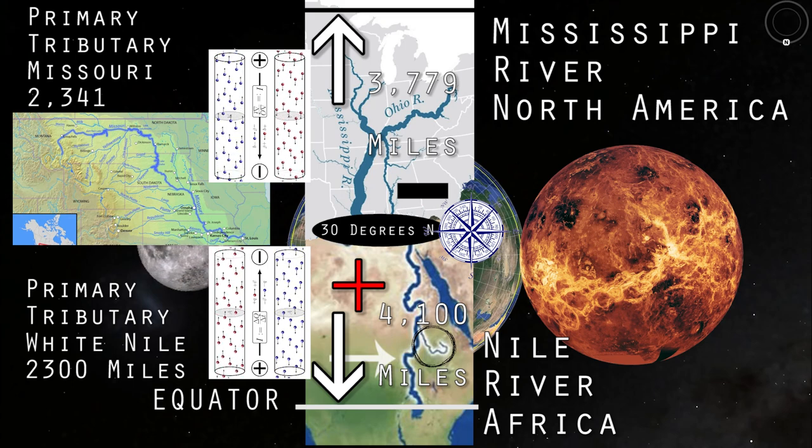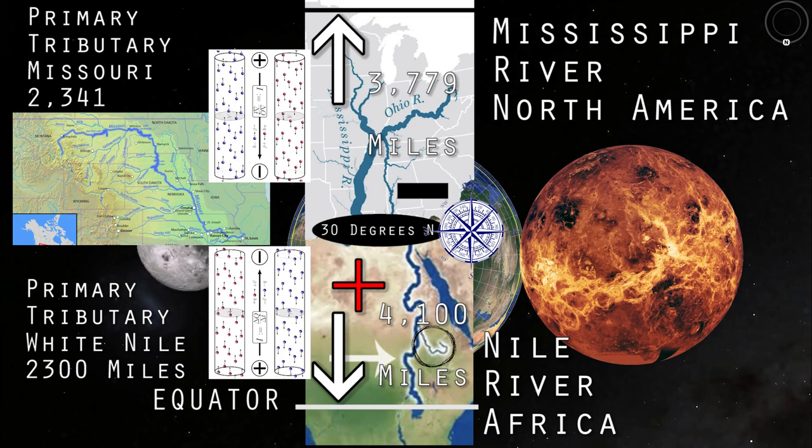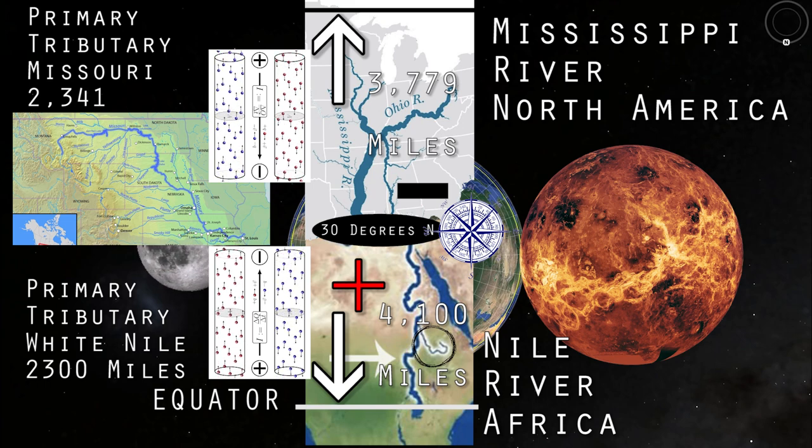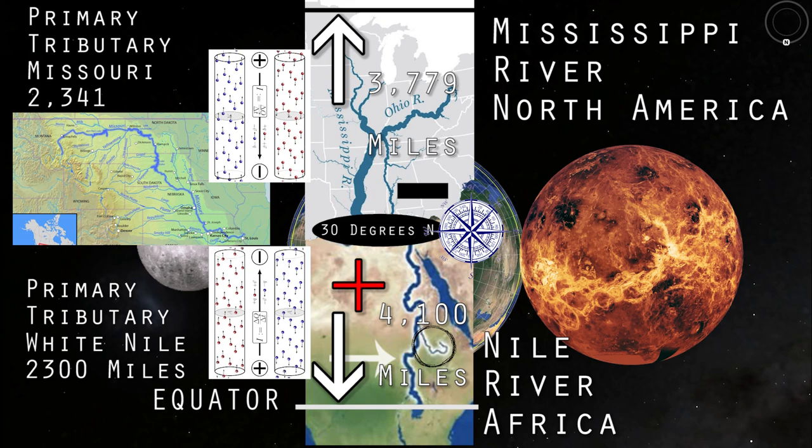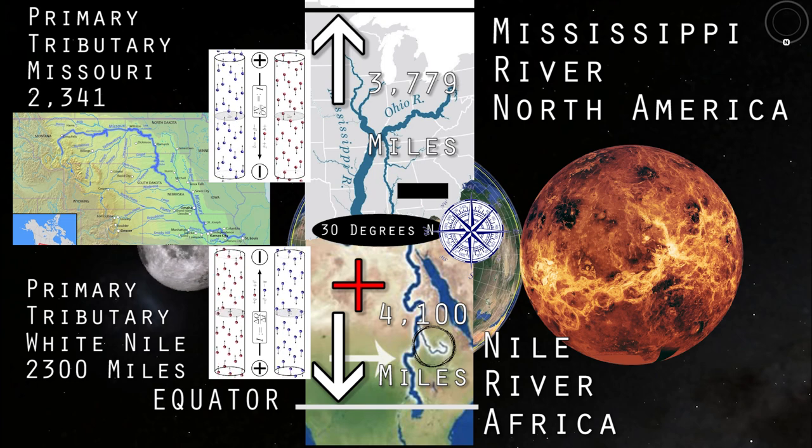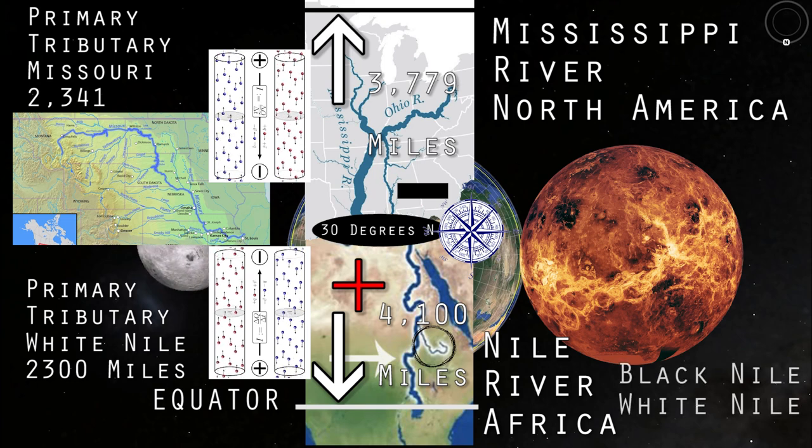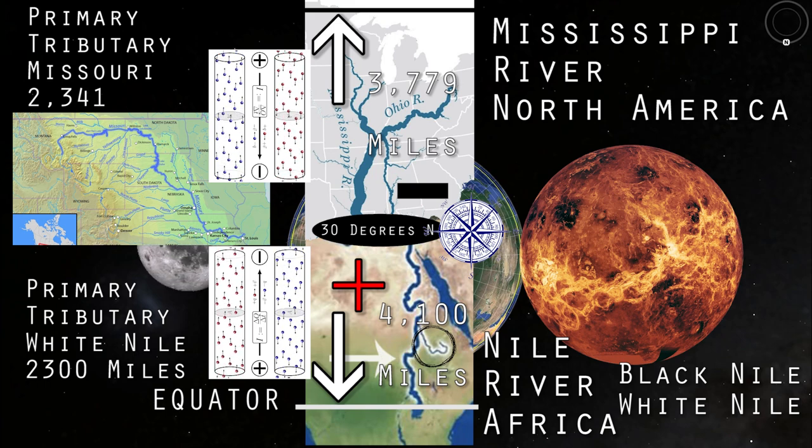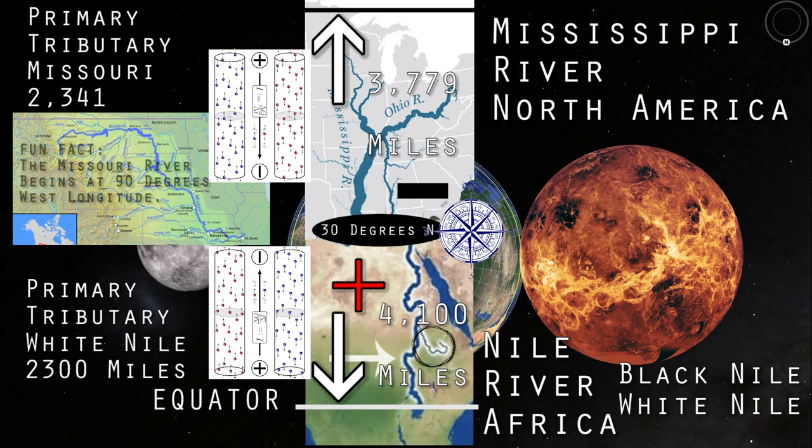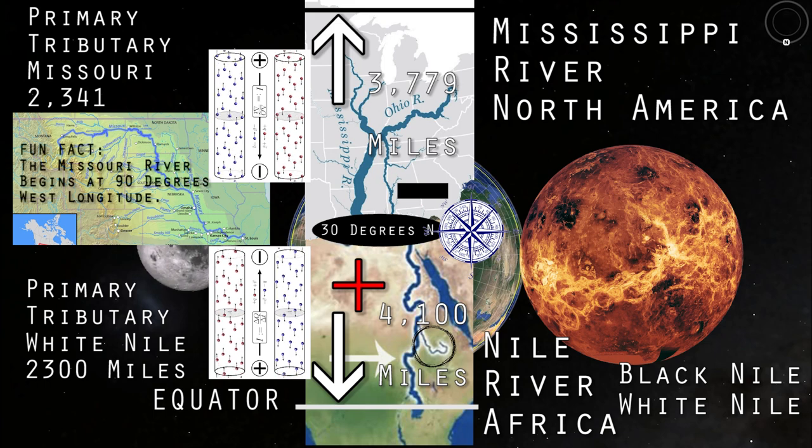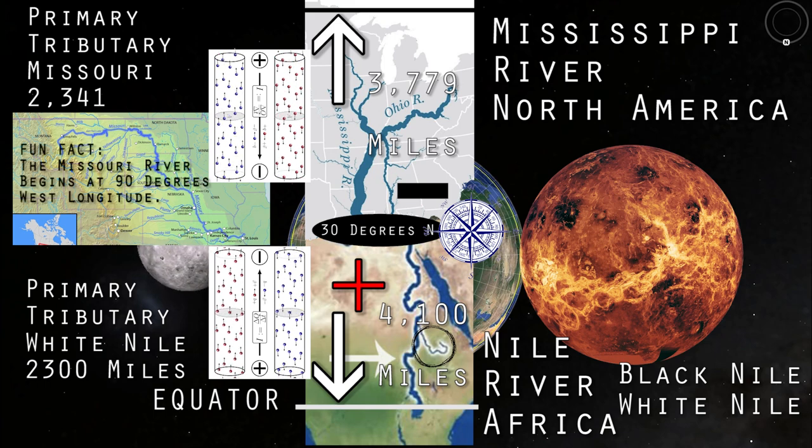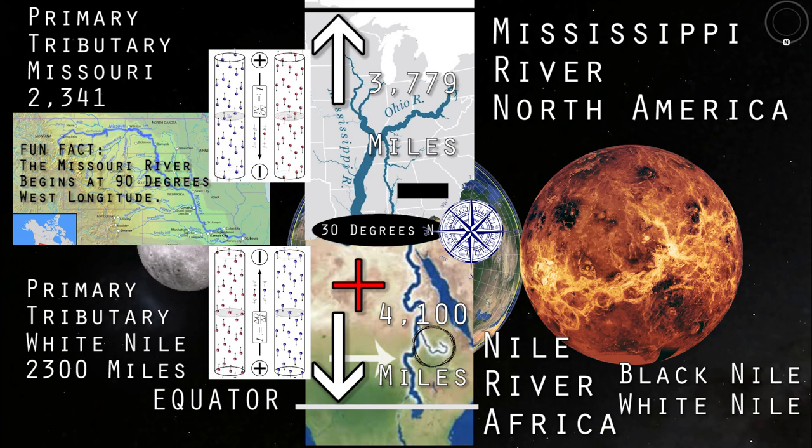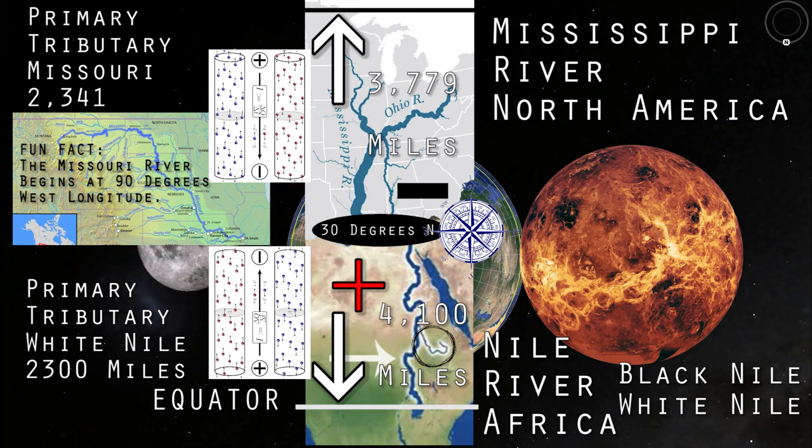While the Nile and the Mississippi's lengths are almost identical, this dynamic changes when we measure total frequency, as the Mississippi has hundreds if not thousands of frequent splits currents, called tributaries, while the Nile has just two. Positive and the positive, positive and the negative. The Nile represents a direct current, positive discharge, while the Mississippi represents an alternating current, positive discharge. Positive and positive, direct current. Positive and negative, alternating current.